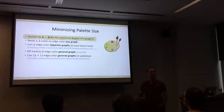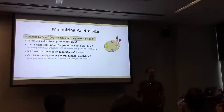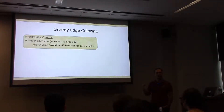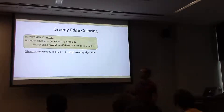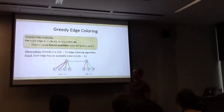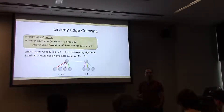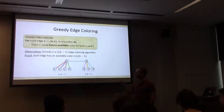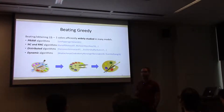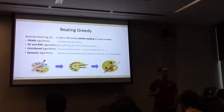Let's look at the most naive algorithm you can think of for this problem. What's a greedy solution? Pick an arbitrary color — or since we're trying to minimize the maximum number of colors, pick the lowest available color. This solution is trivially a 2-delta-minus-1 edge coloring. Both endpoints of edge UV have used up at most delta-minus-1 colors each, so 2-delta-minus-2 colors overall, meaning one of the first 2-delta-minus-1 colors is still available.